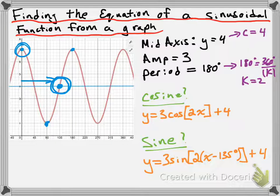Clearly the sine function looks a little bit more complicated than the cosine function, and I would totally agree with that. Sometimes one equation is a lot easier than the other. You'd particularly like to pick a sine or cosine function so that you don't have to phase shift, because that will make things a little bit nicer. In this case, the cosine function means that you don't have to phase shift. But sometimes you won't have to phase shift if you have a sine function.